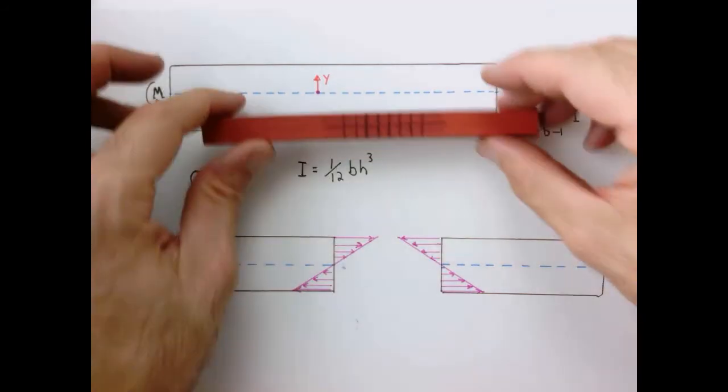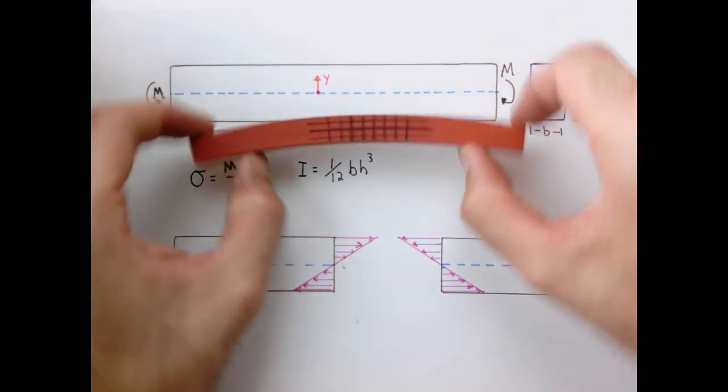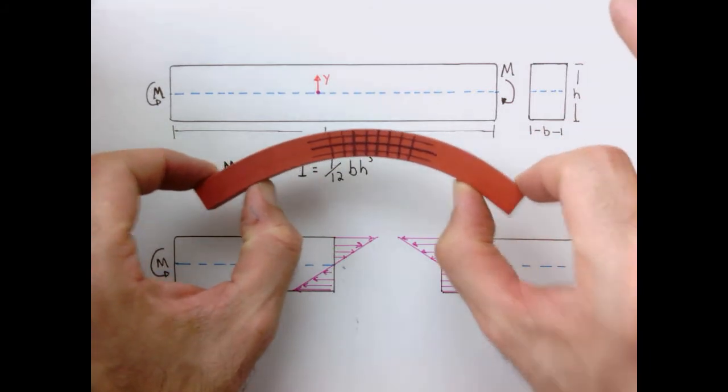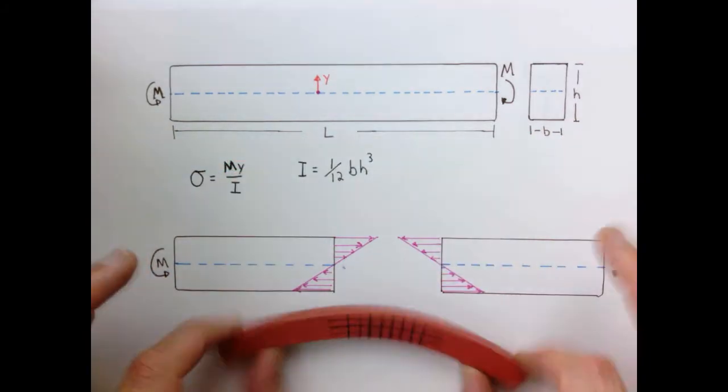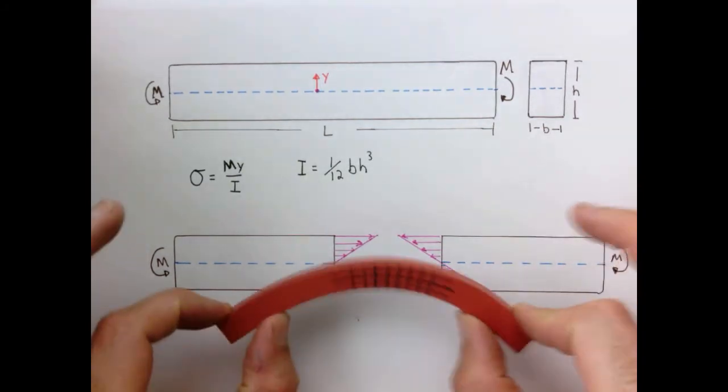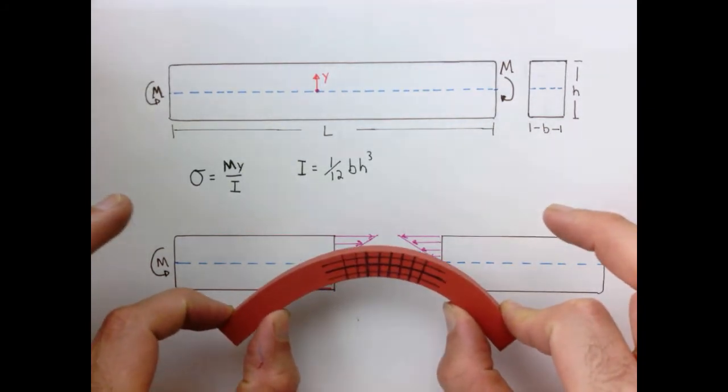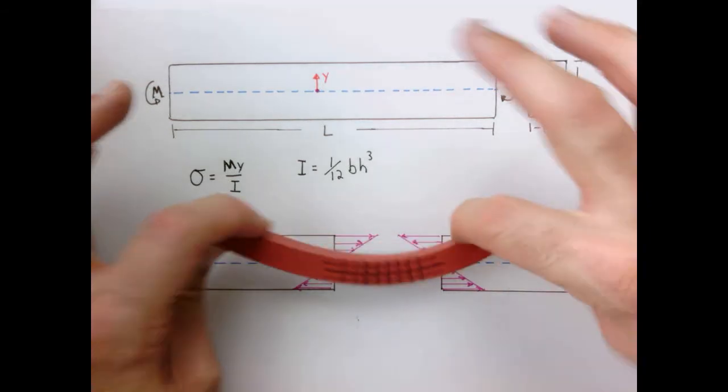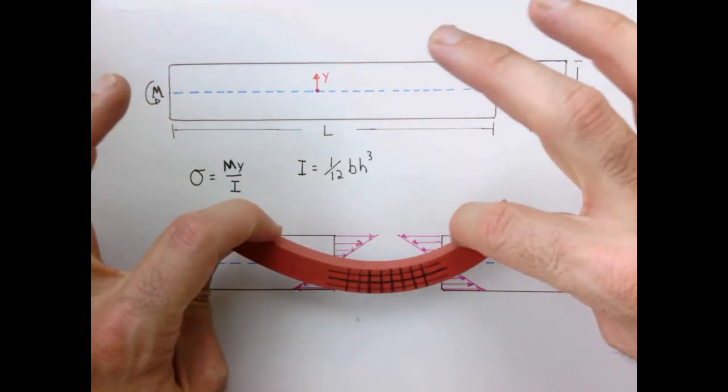And again this is just describing the case where I take my beam and I'm applying a moment in this direction, and since the top surface stretches it's in tension, since the bottom is being smushed it's in compression. Of course this all reverses if I reverse the sign of the moment, but that's basically the same problem.